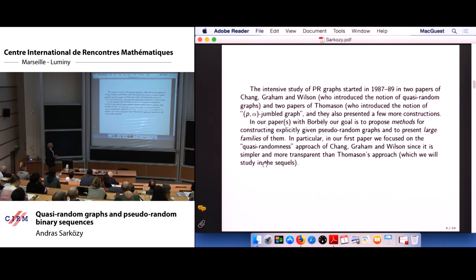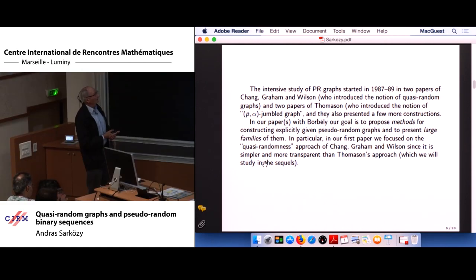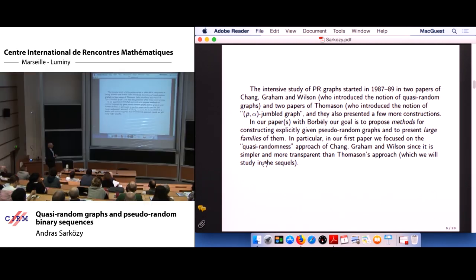The intensive study of pseudo-random graphs started in 1987 and 89 in two papers of Chung, Graham, and Wilson. As I said, they introduced the notion of quasi-random graphs, and in two papers of Thomason, who used the different terminology, p-alpha jumbled graphs, it's too complicated to define it here. And they also presented a few more constructions, but not much more.